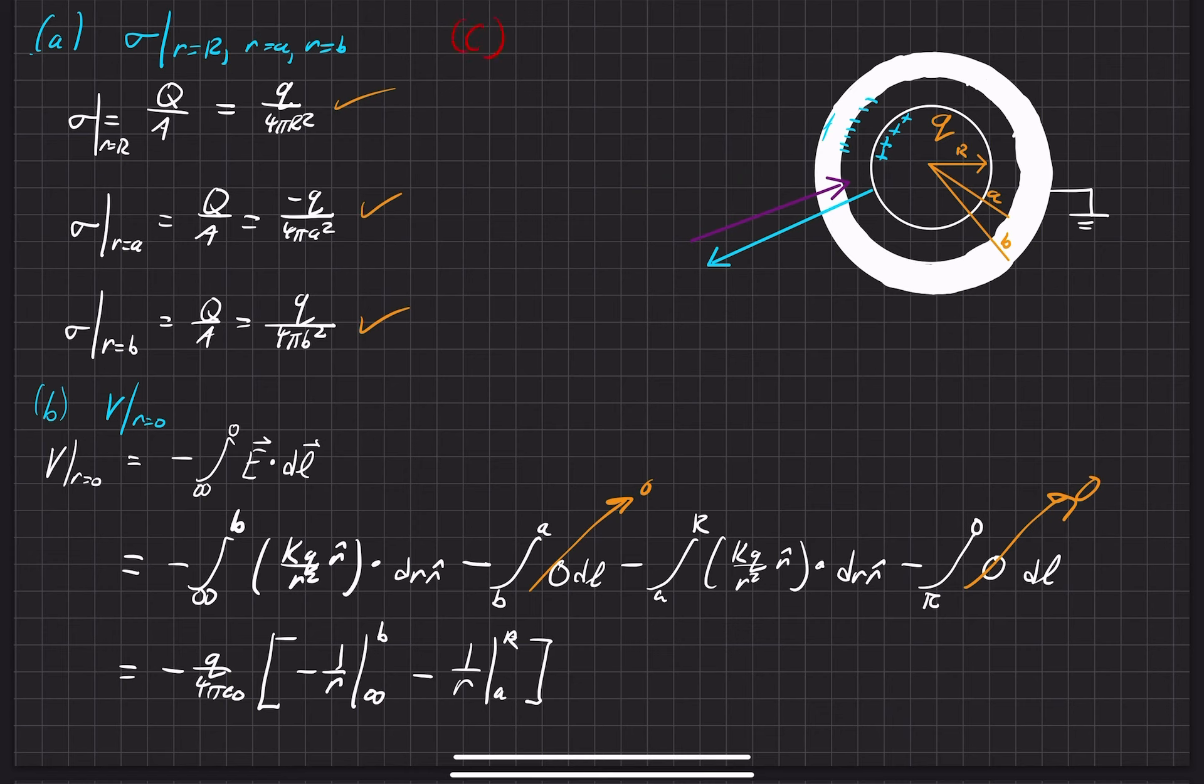Part C specifically asks us to revisit parts A and parts B with this newfound change to the system here. So for part A, the surface charge at R equals R, so on the surface here it still stays the same, so there's no change in that.